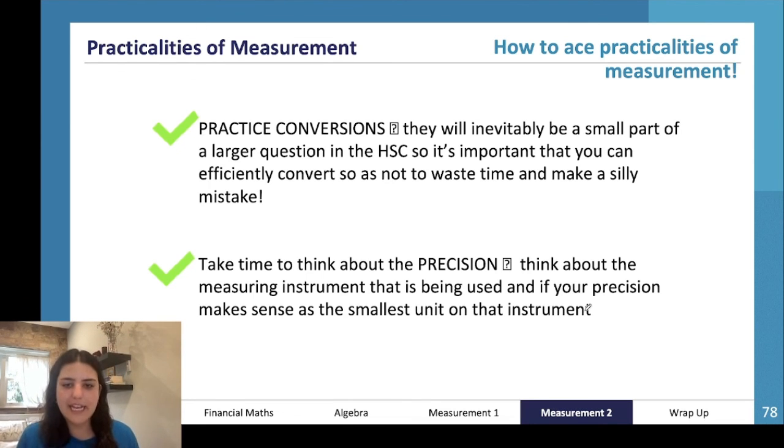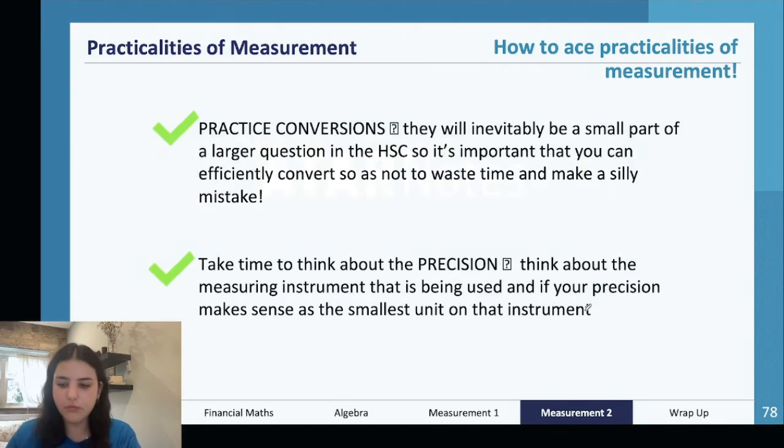And the second tip - make sure to think about the precision and think about the measuring instrument that's being used, and if your precision makes sense as the smallest unit. So what I'm really saying there is if you have a ruler and you find the precision is 10 centimeters, does that sound accurate? Does that sound like the closest measurement that your ruler can measure, or are you actually probably writing down 10 millimeters or one millimeter or something like that.